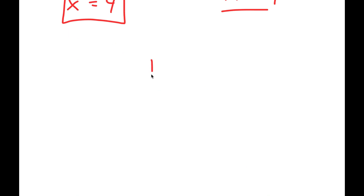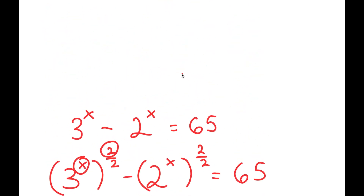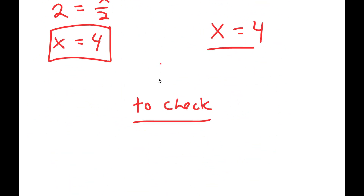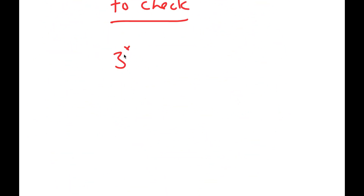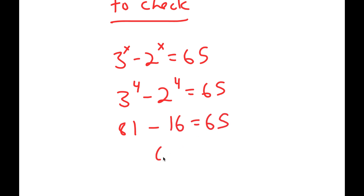The final thing to do is check. My equation is 3 to the power of x minus 2 to the power of x equals 65. With x equals 4, I have 3 to the power of 4 minus 2 to the power of 4, which is 81 minus 16, equal to 65. So 65 equals 65. ✓